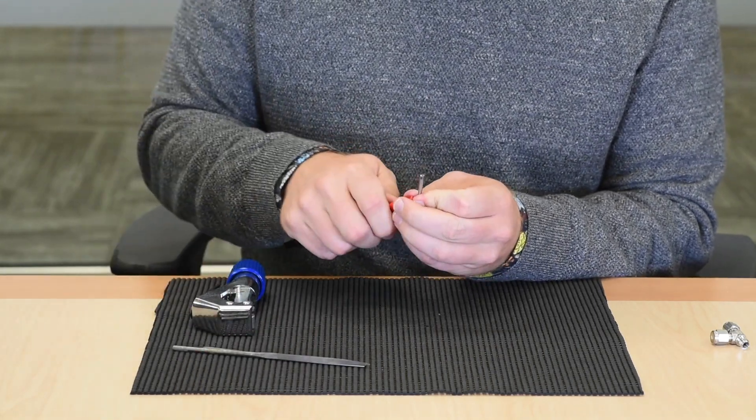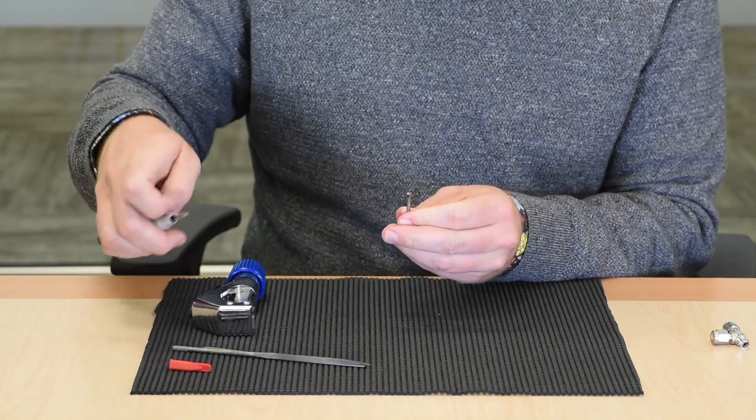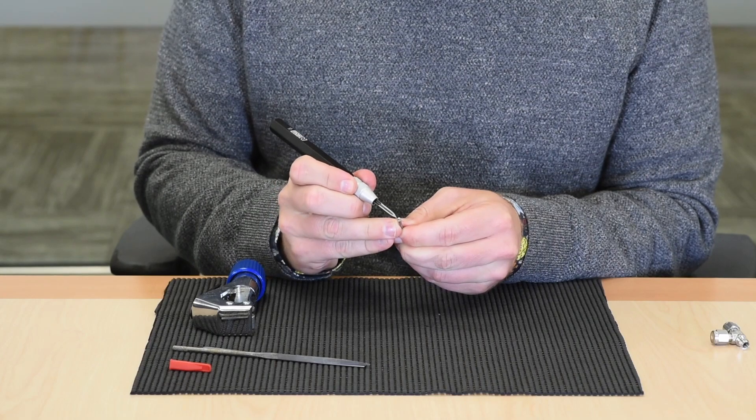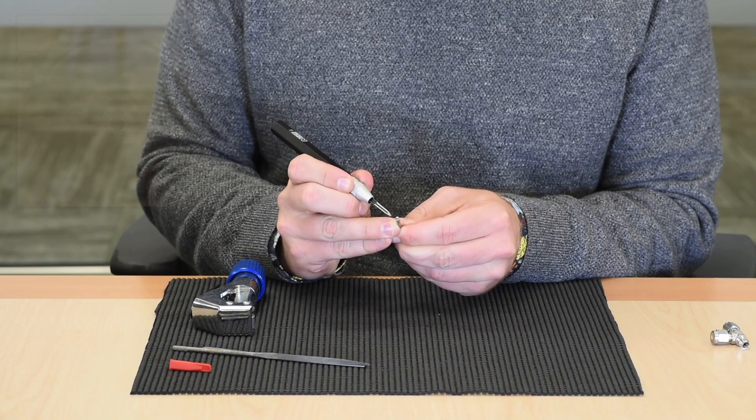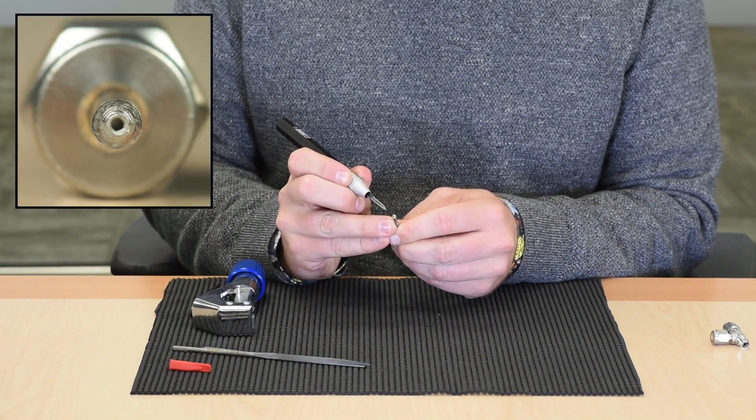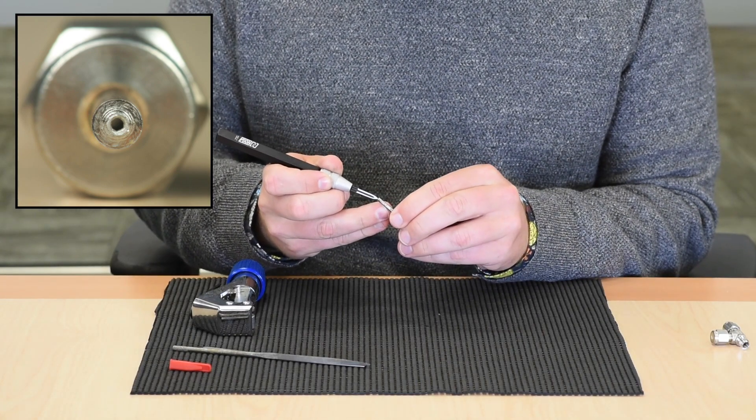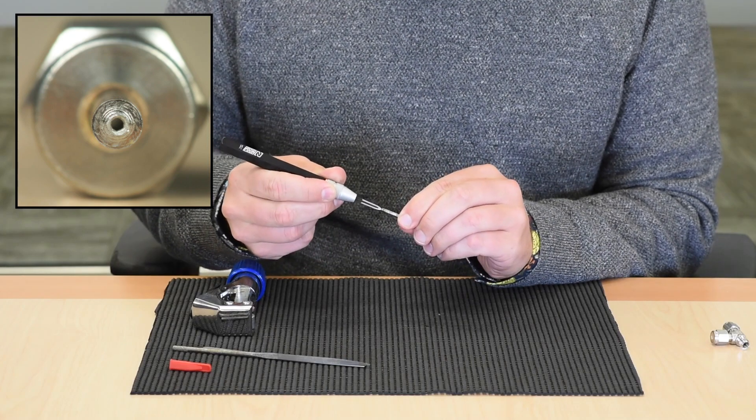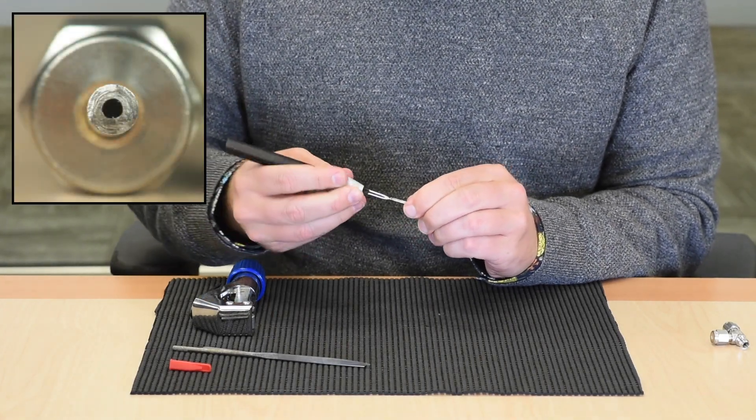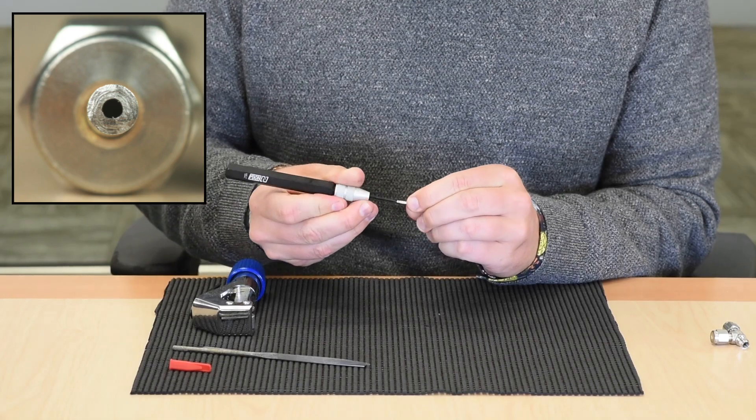And then a third one, a reamer, is quite useful for making sure that that hole isn't too small. If the hole gets too small in the process of cutting the tubing, then you can restrict your flow. The reamer, and I would advise you to be very careful about that, helps you clean out that hole a little bit so that you get better flow.